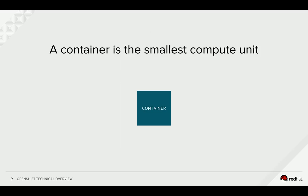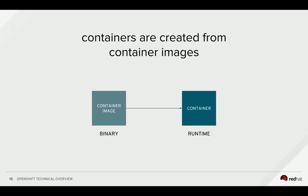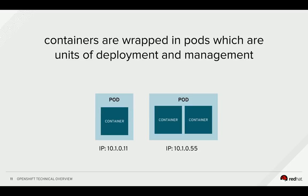All of our application components in OpenShift will run inside of Linux containers on the application nodes. A container is the smallest compute unit in OpenShift. Containers are simply isolated processes running on a shared Linux kernel. The container itself is a running instance created from a container image — a binary packaged with all software components and basic instructions on how the container should run. In OpenShift, a container is wrapped in a construct called a pod. A pod is a group of one or more containers with shared storage and networking, and a specification for how to run the containers inside the pod. A pod's contents are always co-located and co-scheduled and run in a shared context.